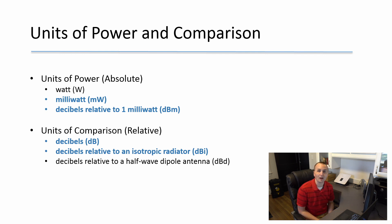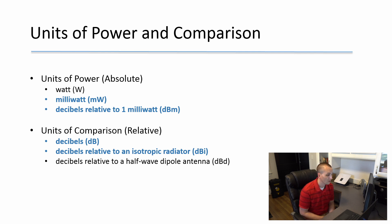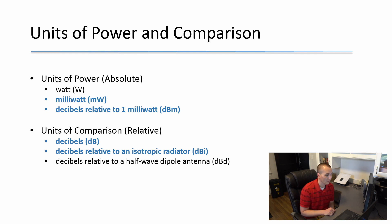Let's talk about the units of power and comparison. The ones we'll be working with today are highlighted in blue. Watt is the basic unit of power — one watt equals one amp of current flowing at one volt — but for our purposes we're going to hang out in milliwatts. One milliwatt is one one-thousandth of a watt. Most indoor 802.11 equipment operates at transmit power levels within one to 100 milliwatts.